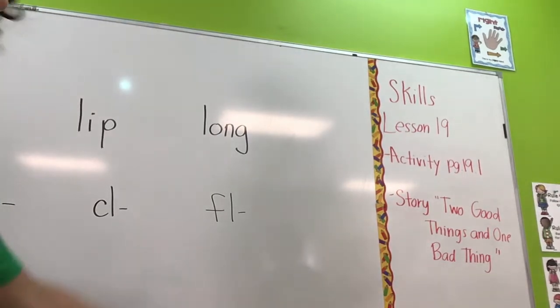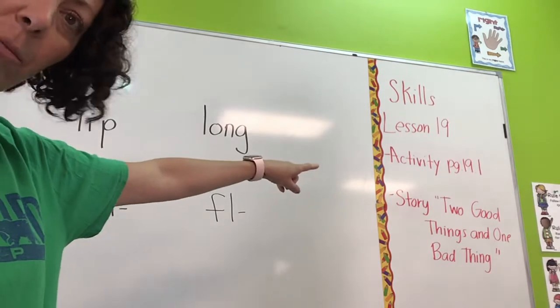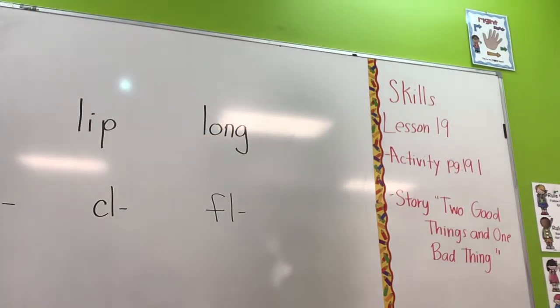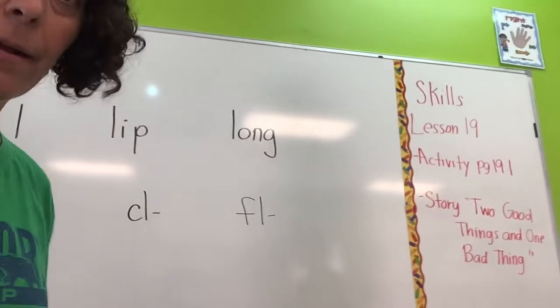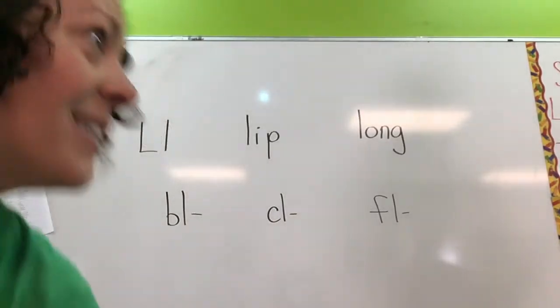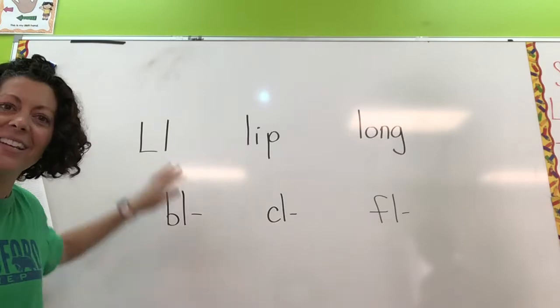Good morning, first grade. We are going to have the information listed in this corner each time we do one of our skills worksheets. Skills lesson 19, activity page 19.1. Story we'll be reading, two good things and one bad thing. The skills workbook page in your workbook is page 97. And what we're going to go over today, friends, is the L sound.